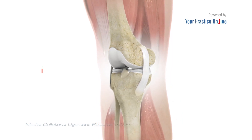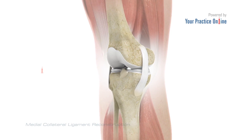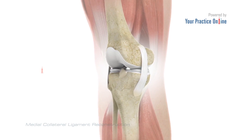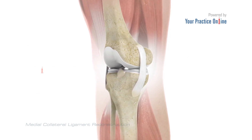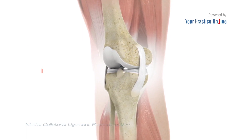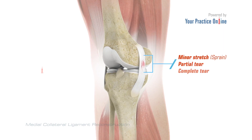An injury to the MCL may occur as a result of direct impact to the knee. An MCL injury can result in a minor stretch, sprain, or a partial or complete tear of the ligament.